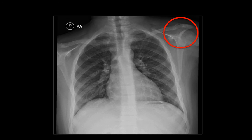Now let's look carefully at the contralateral side. Although it's partially visualized on this radiograph, you also notice that there is an ill-defined appearance of the lateral aspect of the clavicle.